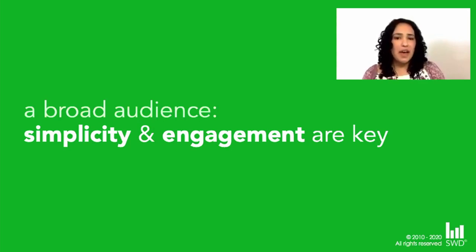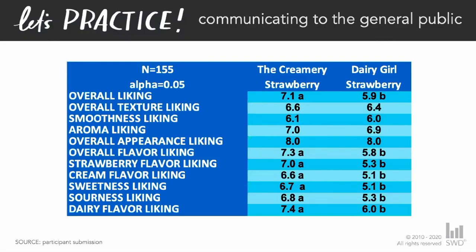So let's come back to our original table for a moment. When we look at this, we can see it's pretty detailed. We asked folks a number of questions, we quantified their responses between these two brands, we even got some letters indicating significant difference. We also have some survey details — our sample size and our significance level.